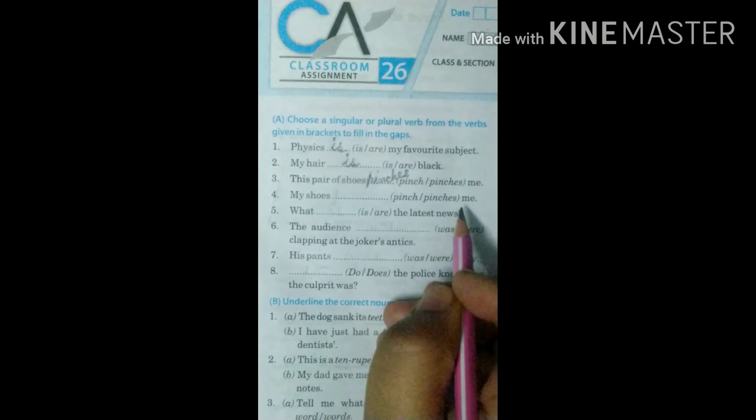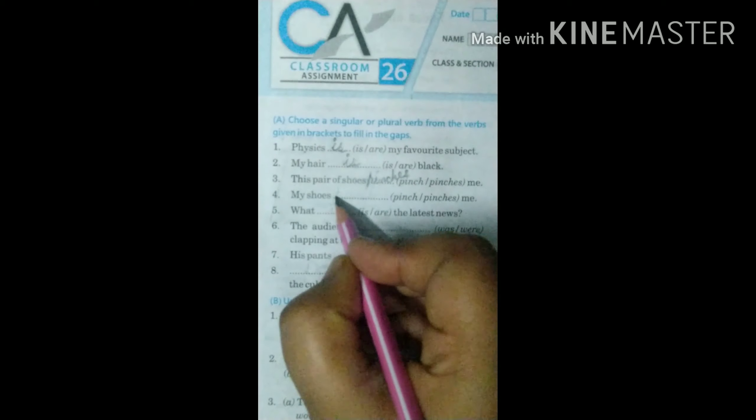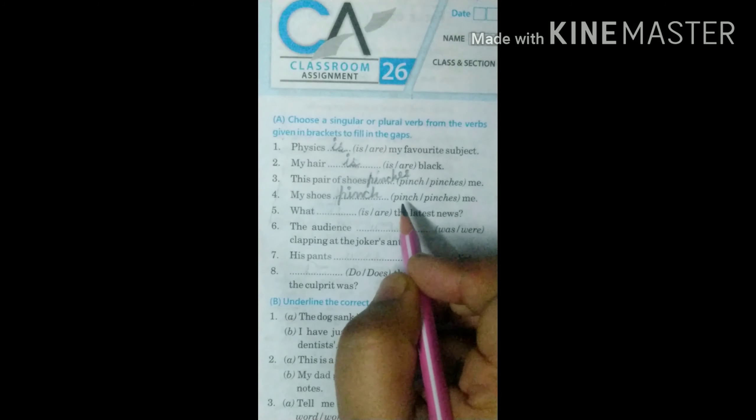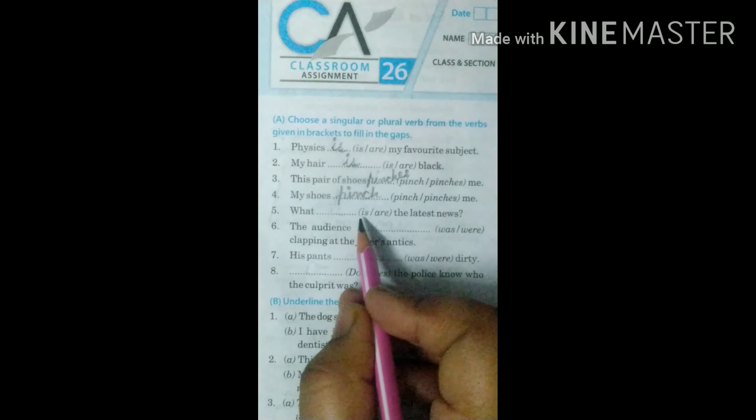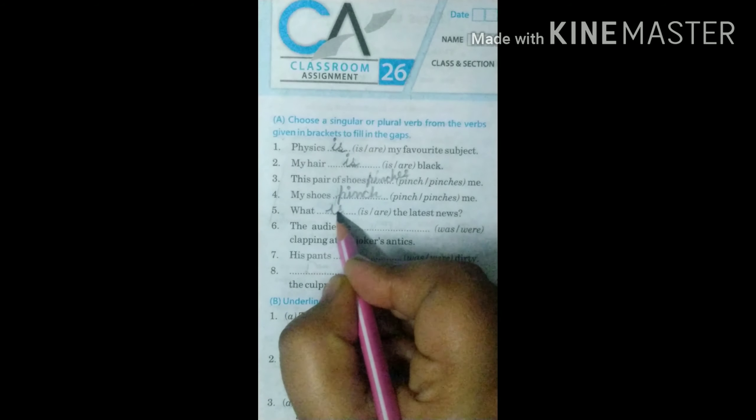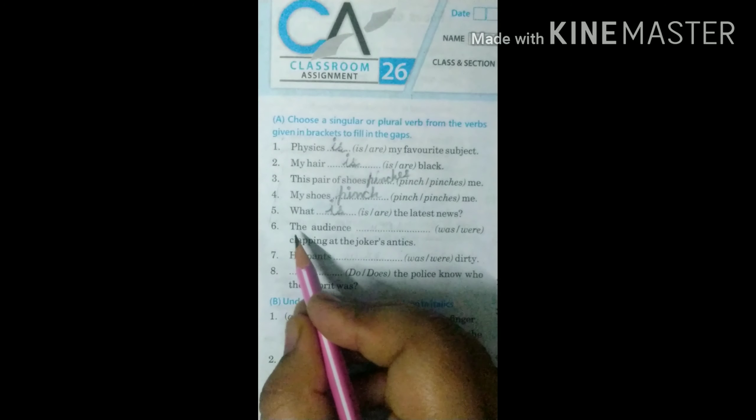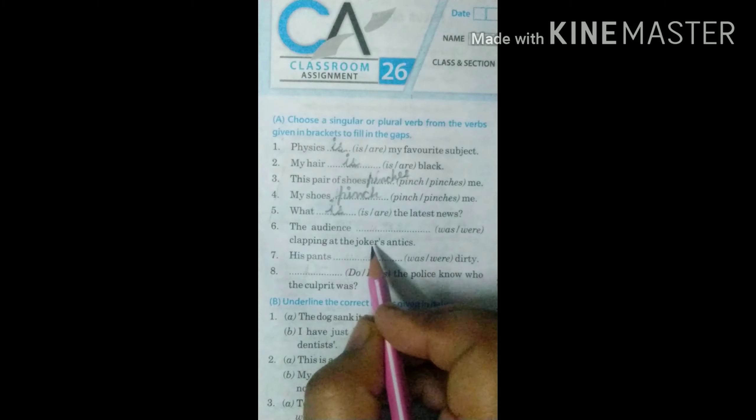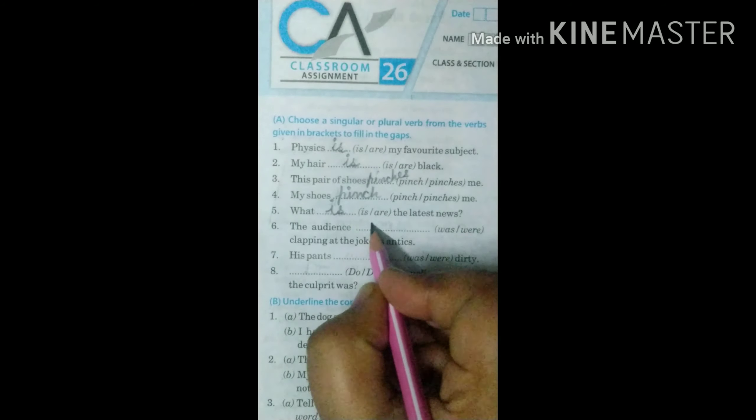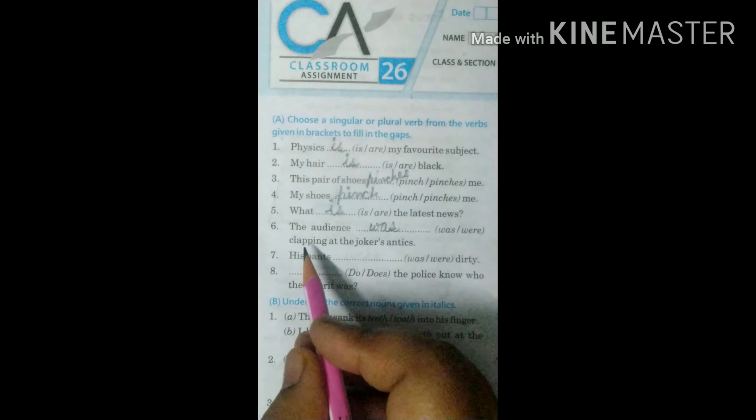Fourth is my shoes dash me. Shoes. Now we take it as plural. So it will be pinch. Because with plural we use only first form of the verb. Next is what dash the latest news. News is a singular term. So we use here what is the latest news. Next is the audience dash clapping at jokers and teeks. Audience is a collective noun. We put singular verb with collective noun.